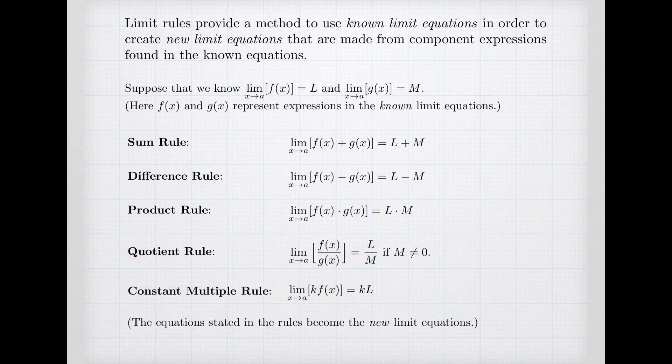So we'll be using these in order to calculate limits. Because each of these rules is justified through a proof, any results that come from these are guaranteed to be true. Note that for the quotient rule, the denominator limit cannot equal zero.